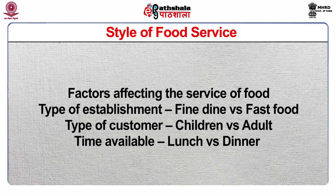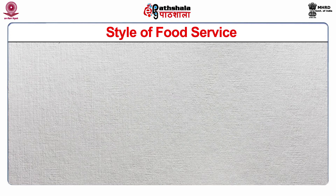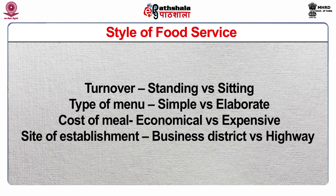Other factors can be type of customer, like children versus adults. Next factor can be time available — lunch versus dinner — and sitting turnover, standing versus sitting. Type of menu, either simple or elaborate. Number six is cost of meal — economical versus expensive. Number seven factor is site of establishment — business versus highway.